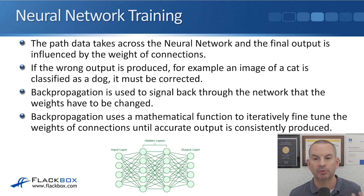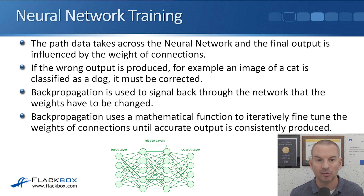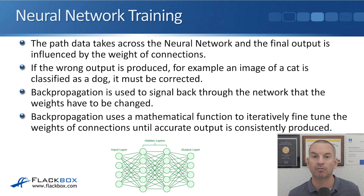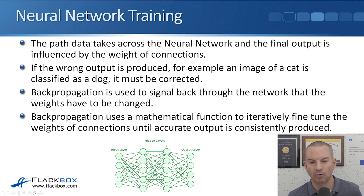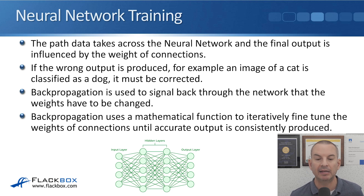If the wrong output is produced — for example, an image of a cat is classified as a dog — then that must be corrected by training the neural network. This is usually done through back propagation, which is used to signal back through the network that the weights have to be changed. If we input an image of a cat but it's classified as a dog, there was a problem across the hidden layers and it's not taking the correct path, so we need to influence the weights of connections.